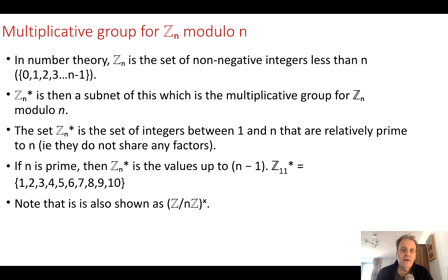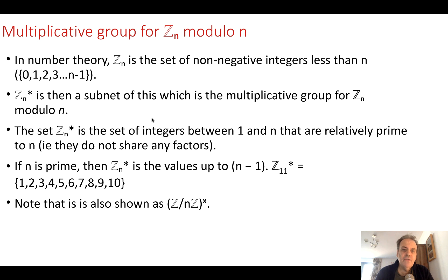Zn* is actually a subset of Zn — it's the multiplicative group of Zn modulo n. The values in this subset will not share any factors with n.